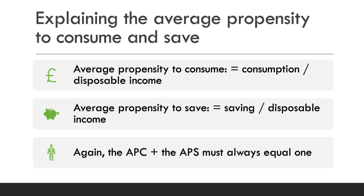Another related concept important to grasp is the average propensity to consume and save. The APC is simply total consumer spending (consumption) divided by disposable income. Likewise, the average propensity to save — also known as the savings ratio — is total saving divided by disposable income. Again, since income can be spent or saved, the coefficients for APC and APS must always equal one.